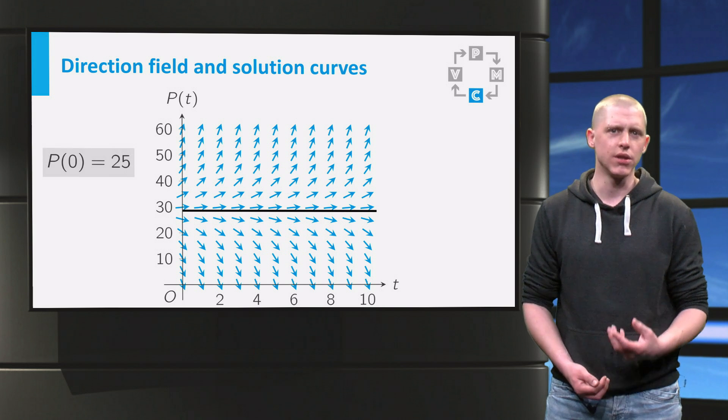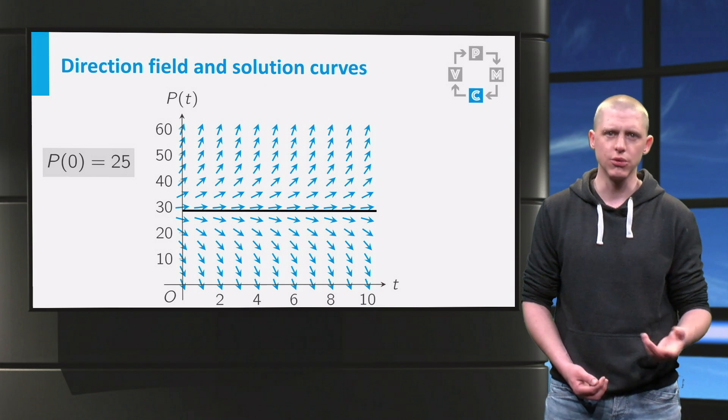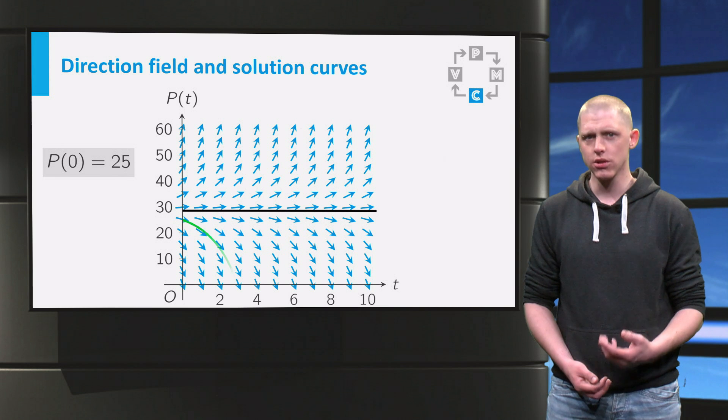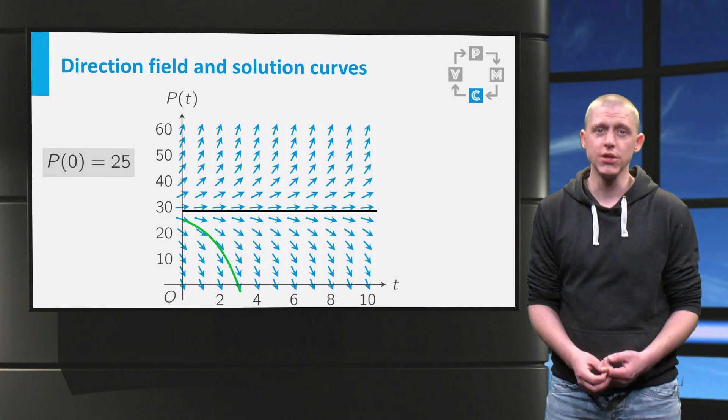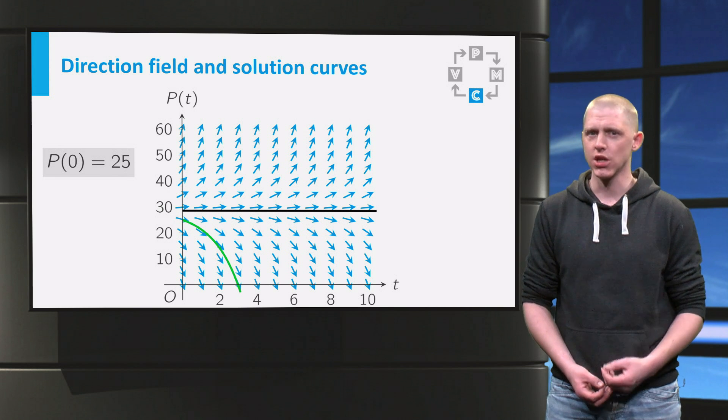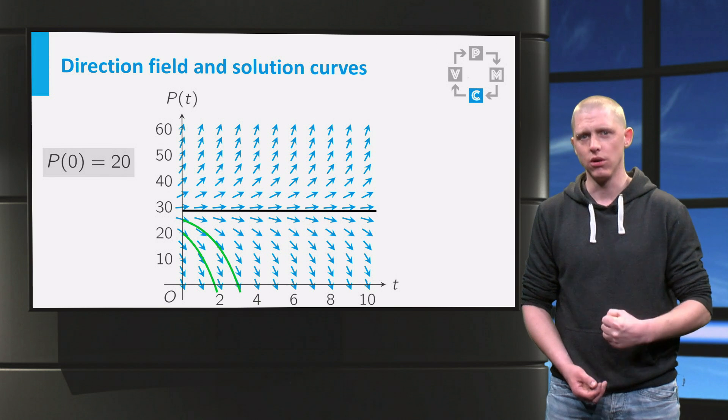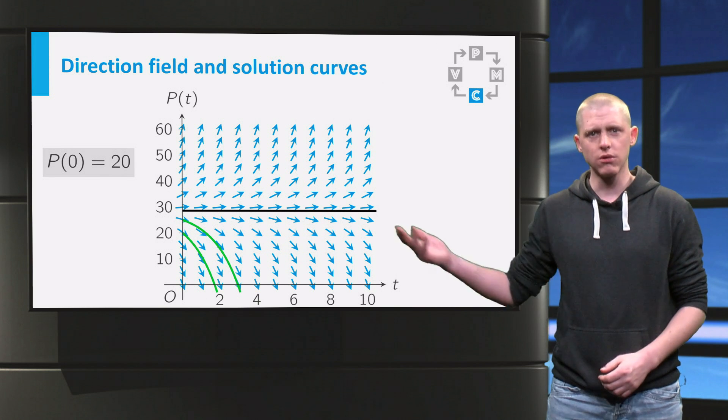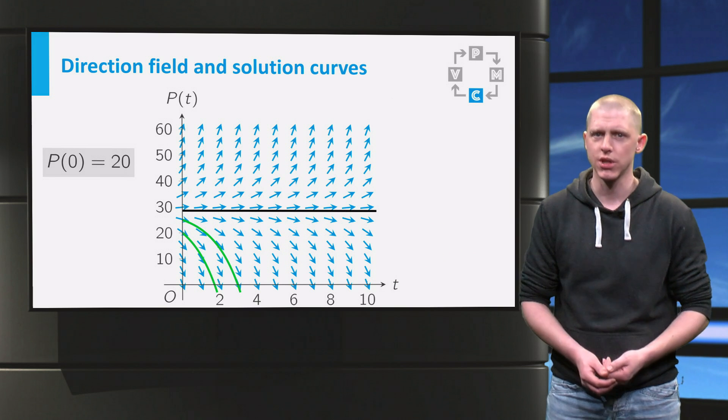So now let us take an initial population of 25 fish, so p at time zero equals 25, and sketch the solution curve in green. As you can see, if time increases, the green curve goes down quickly. If you sketch one more solution curve with an initial value of p between zero and the equilibrium, you get this graph. This curve also goes quickly away from 28.6.